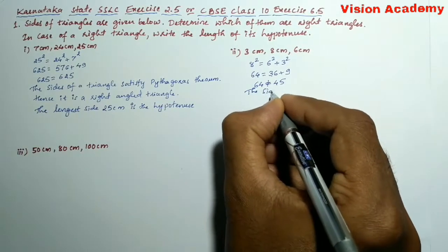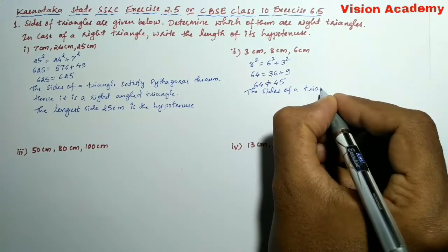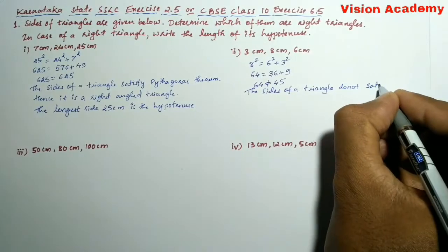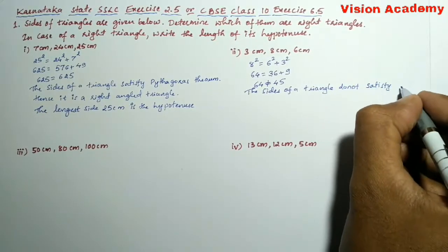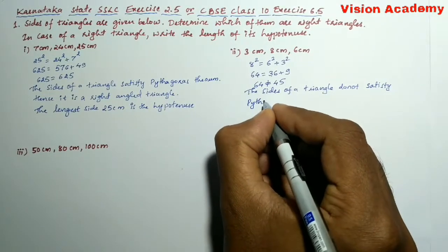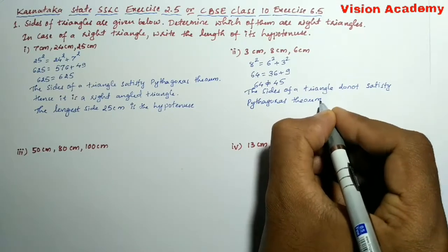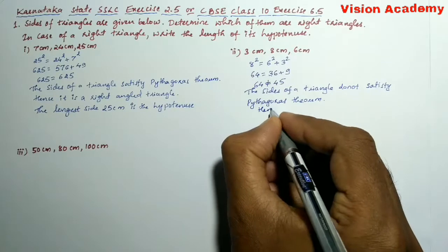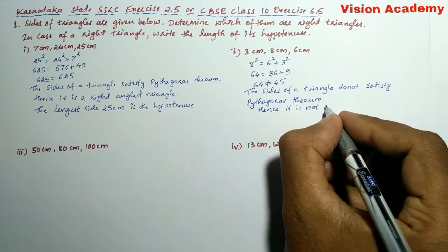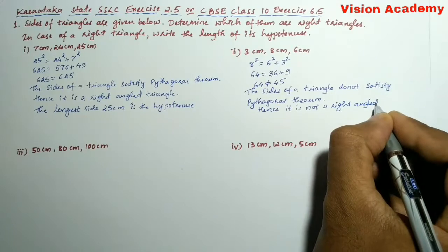The sides of the triangle do not satisfy Pythagoras theorem. Hence it is not a right angled triangle.